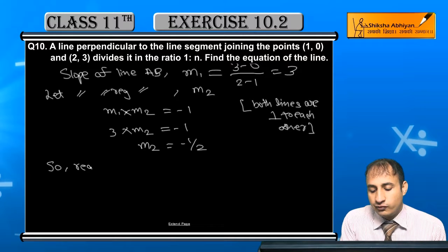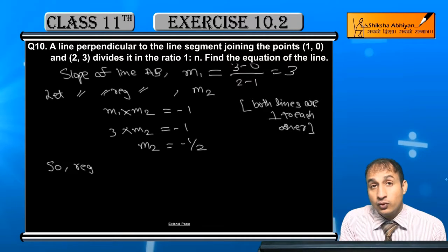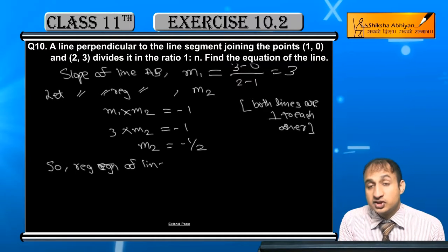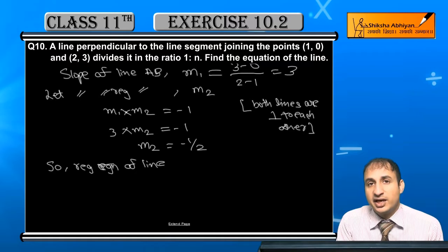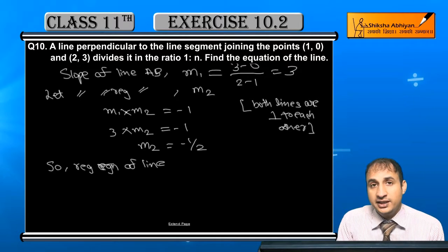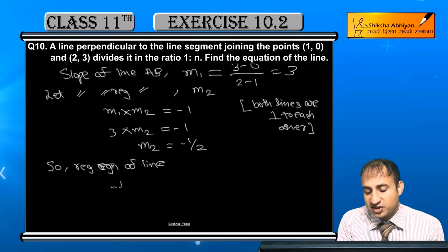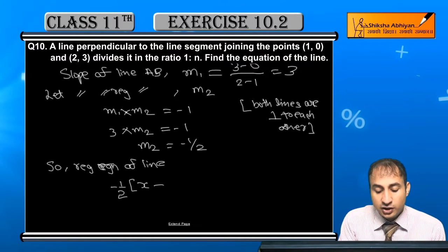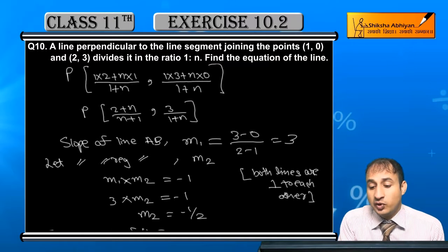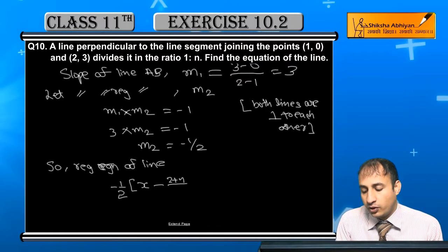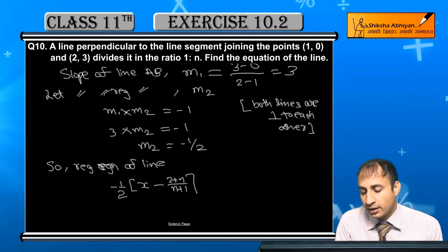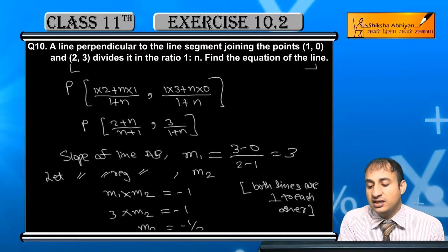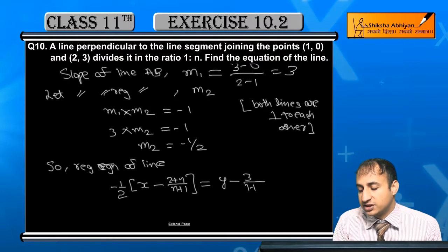So equation of required line: slope is minus 1/3 and one point P is known, so in slope form: minus 1/3 times [x - (2+n)/(n+1)] = y - 3/(1+n).